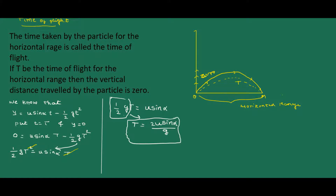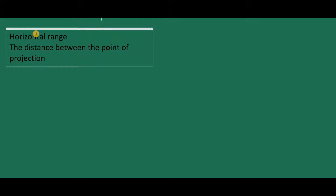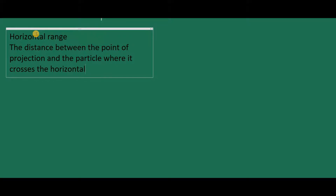Transposing G divided by 2 to the right hand side, we get T equals 2u sin α divided by G. This is the time of flight — the time taken by the particle to reach the horizontal range. Next, horizontal range: the distance between the point of projection and where the particle crosses the x-axis or horizontal plane, denoted by capital R.